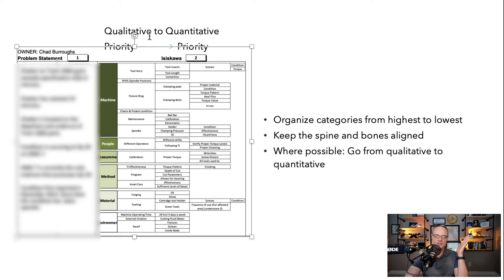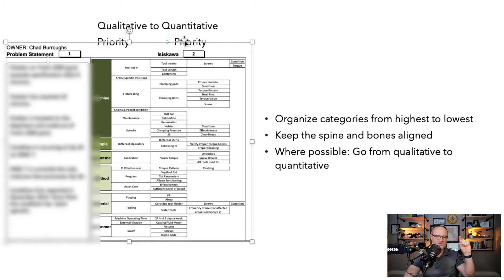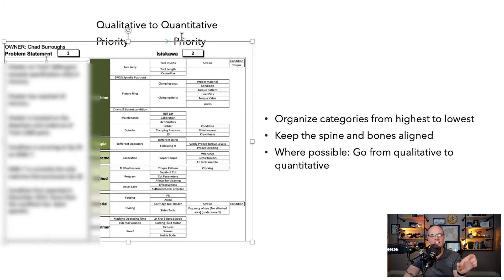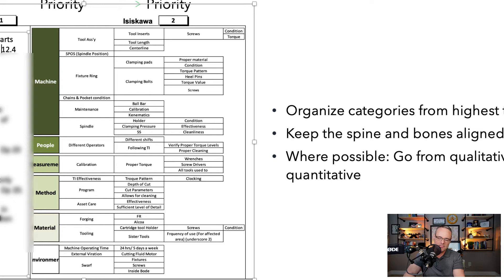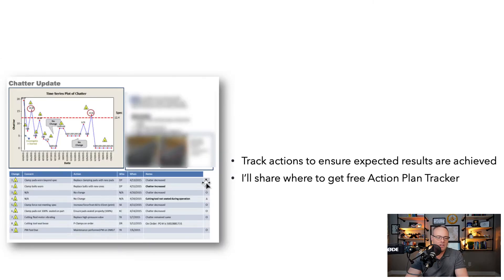The key point here is that you're doing it based on priority, and you're also taking it from qualitative to quantitative — this is really important. Usually with Ishikawas it's all qualitative, but now we're getting to a part where we can get down to quantitative measurements. With screws and torque, we can actually get a measurement — what should the torque be?